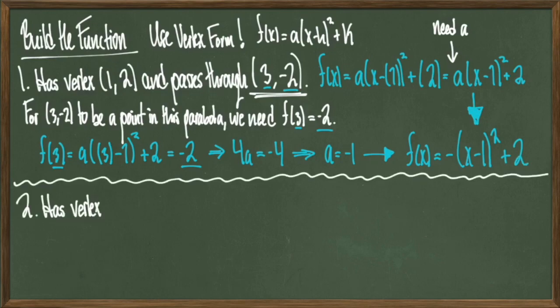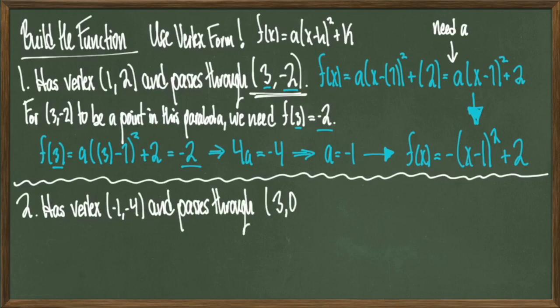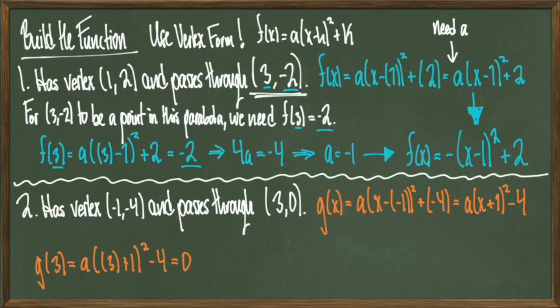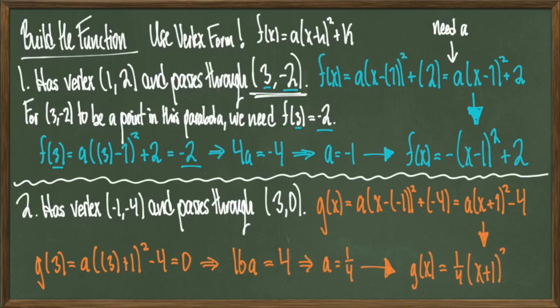Let's try another example: build a function with vertex (−1, −4) that passes through the point (3, 0). Using the same process, we plug the vertex into vertex form to get g(x) = a(x + 1)² − 4. Since the parabola passes through (3, 0), we know g(3) = 0, so a(3 + 1)² − 4 = 0. Solving for a gives a = 1/4. Substituting back, g(x) = (1/4)(x + 1)² − 4.